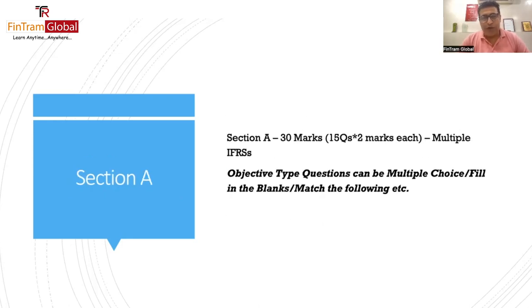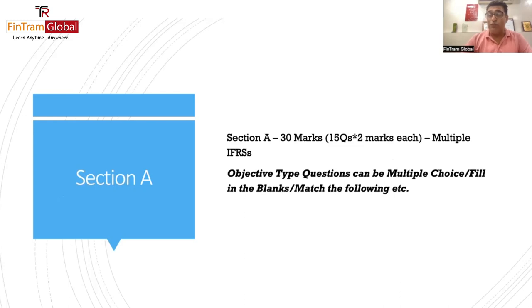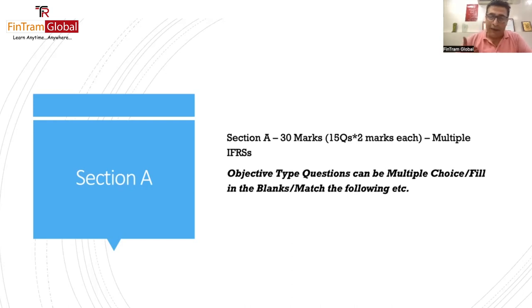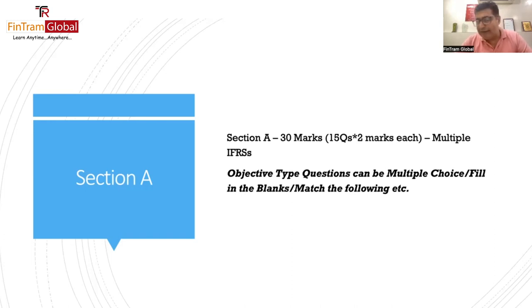Section A has 30 marks — 15 questions of two marks each — and they will test you on multiple IFRSs. Many students pick and choose a topic and do not cover the entire syllabus of IFRSs. That is a big blunder. You cannot cherry-pick topics. You have to do all the IFRSs because the examiner may ask multiple IFRSs in the exam, especially when he has the option of testing you on MCQs. There should be no cherry picking.